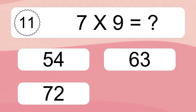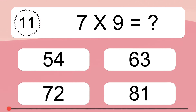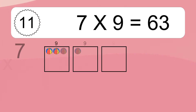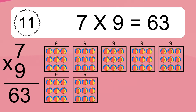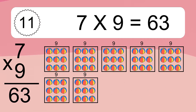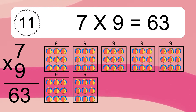7 times 9 equals what? 7 times 9 equals 63. We have 7 boxes, and each box has 9 colorful balls inside. If you count all the balls in all the boxes together, you will have 7 times 9 balls. This equals 63 balls.